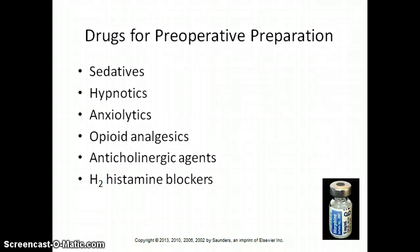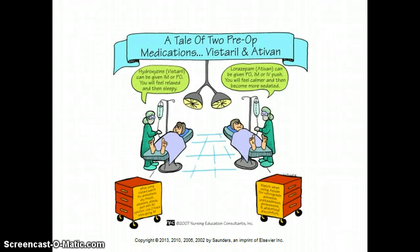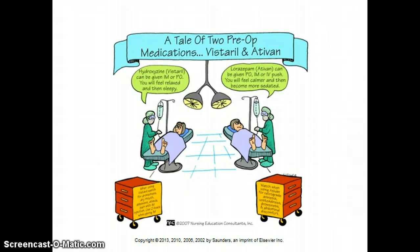When talking about opioid analgesics, two specific medications are Vistaril and Ativan. Vistaril is also a component of MAHOS and helps patients become relaxed and sleepy — it's typically given IM or PO. Ativan can be given IV push and produces a nice calming effect, but we have to watch for severe drowsiness — so much that a patient may stop breathing. Vistaril typically causes dry mouth and dizziness, so those are things to monitor for patient safety.